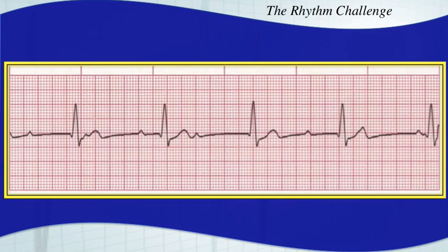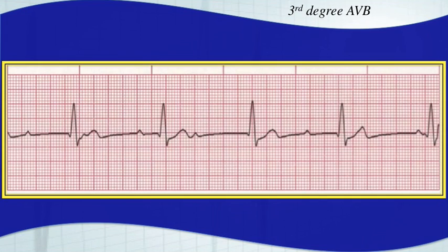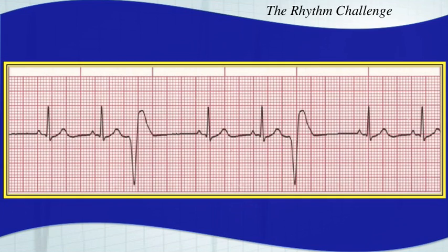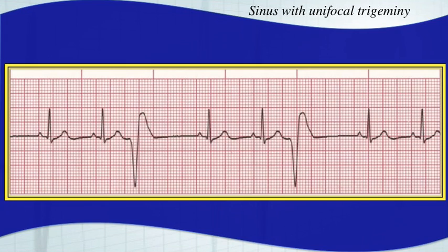This is a third degree AV block — complete AV dissociation, also sometimes called complete heart block. And this last one is simply a sinus rhythm with unifocal ventricular trigeminy.